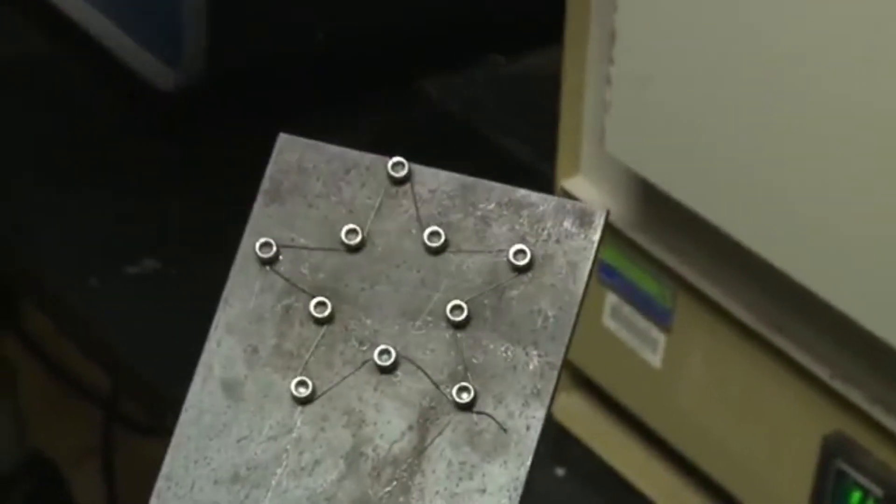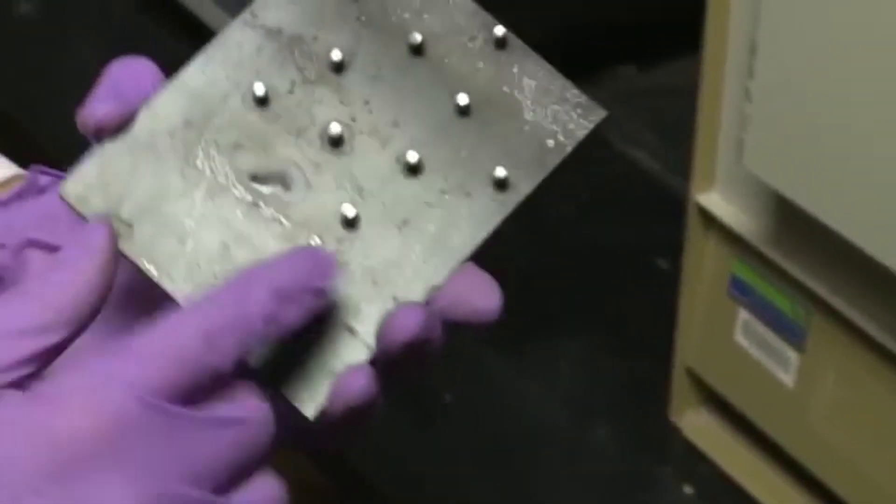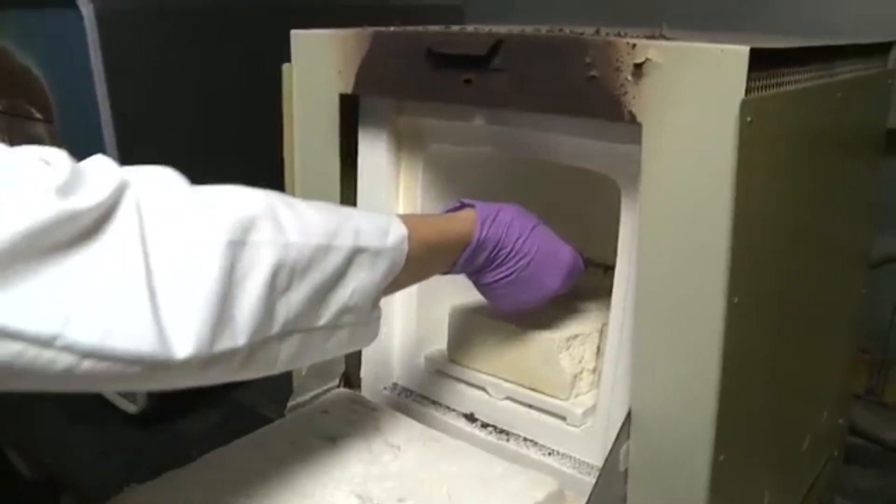How do we set the memory shape? To set the shape that we want, we must hold the material in the austenite phase at high temperatures. Here, we have used screws to hold the wire in place on a metal plate, which we then put into the furnace to heat it.